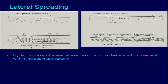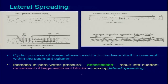The non-liquefiable unit will fracture, and blocks will float on the surface. The separation points will be fractures or fissures which develop because of the breaking up of blocks on the surface. Increase in pore water pressure and densification will result in sudden movement of large sediment blocks, causing lateral spread. This will start moving along the gradient or slope and can result in a complete landslide.